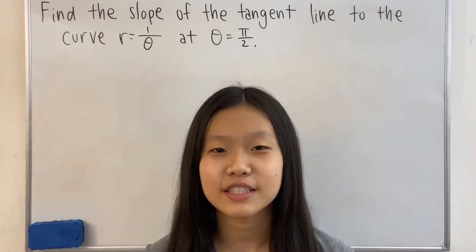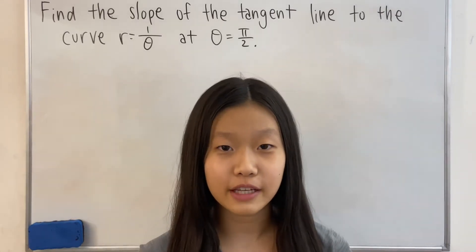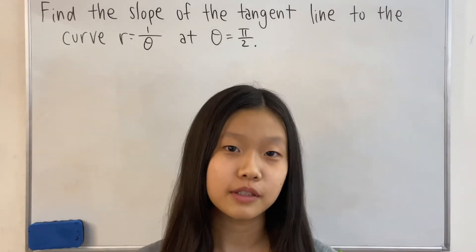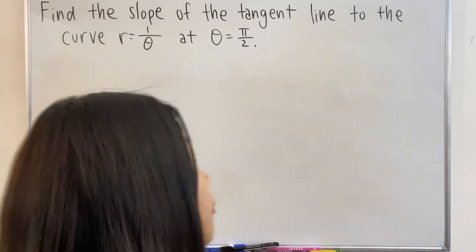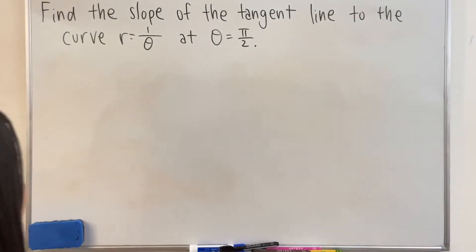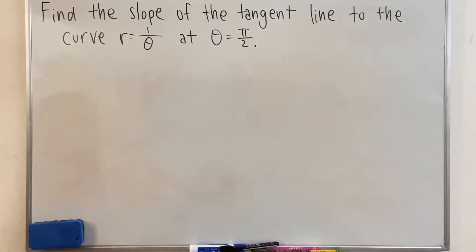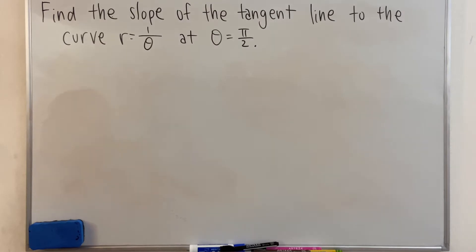Hello everyone! In this video, we have a problem that says: find the slope of the tangent line to the curve r is equal to 1 divided by theta, at theta is equal to pi over 2.